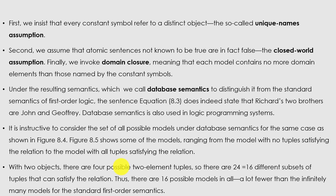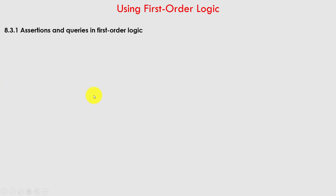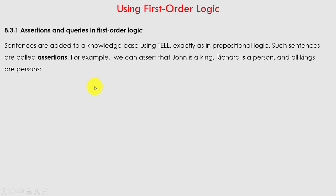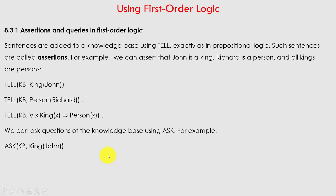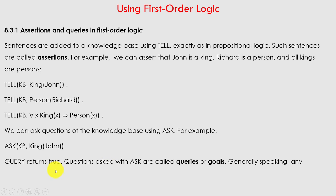This was the basic coverage of quantifiers. Next is assertions and queries in first-order logic. Sentences are added to a knowledge base using Tell, exactly as in propositional logic. Such sentences are called assertions. For example: Tell(KB, King(John)); Tell(KB, Person(Richard)); Tell(KB, ∀x King(x) ⇒ Person(x)). We can ask questions of the knowledge base using Ask — for example, Ask(KB, King(John)).